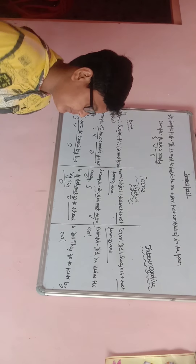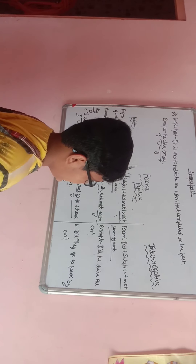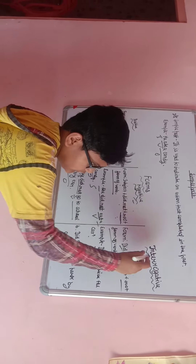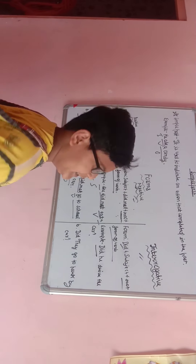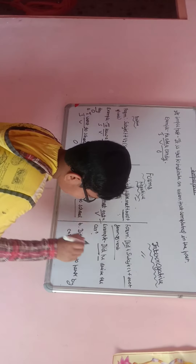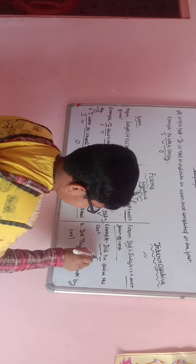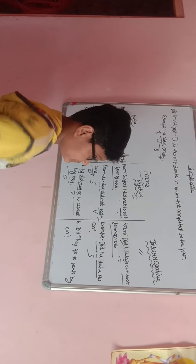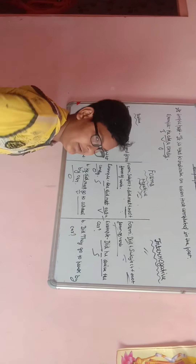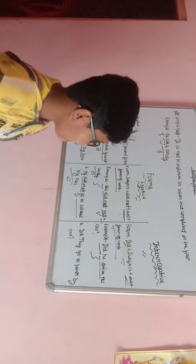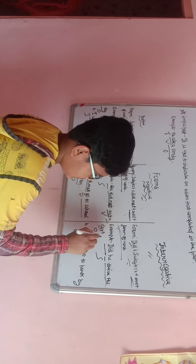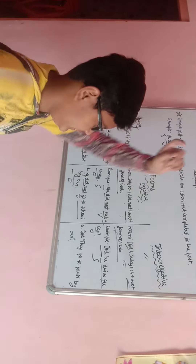For example, 'Did he drive the car?' Here 'did' is placed first because it is an interrogative sentence. 'He' is the subject. 'Drive' is the root form of the verb. 'The car' is the object, and we put a question mark because it is interrogative.